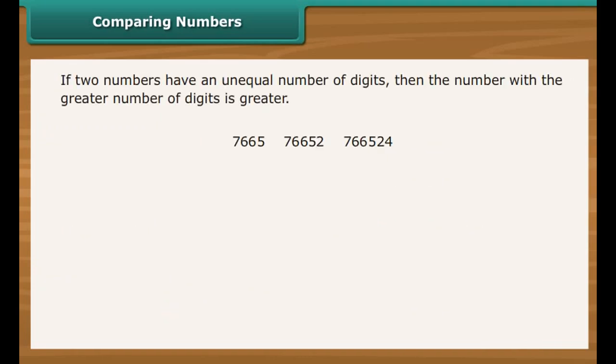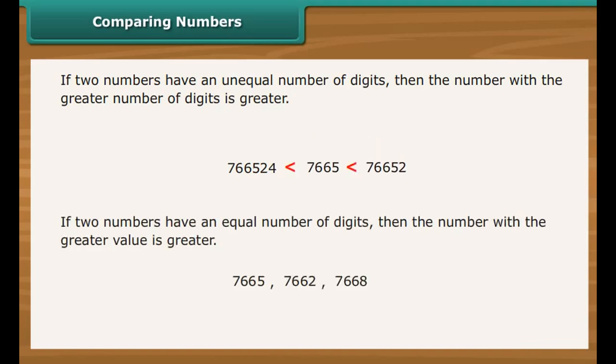If two numbers have an unequal number of digits, then the number with a greater number of digits is greater. If two numbers have an equal number of digits, then we need to compare numbers at each position.